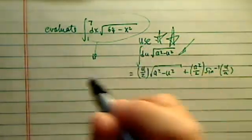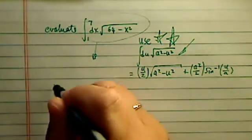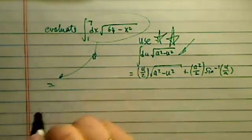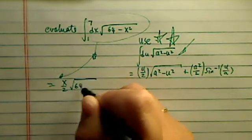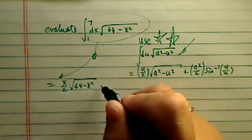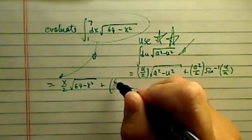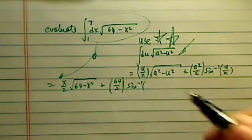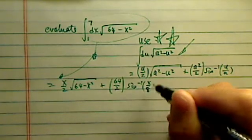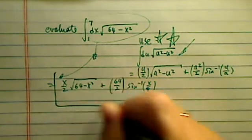But for the purpose of there, just to give the answer for now, so this one is really equal to x over 2, let's see, a is 64 minus x squared plus 64 divided by 2 arcsin of x over 8. So here's the answer.